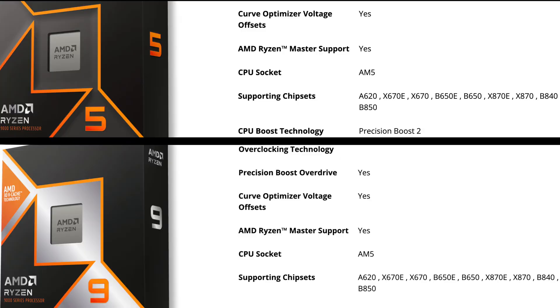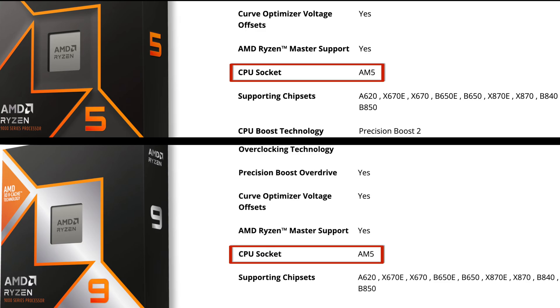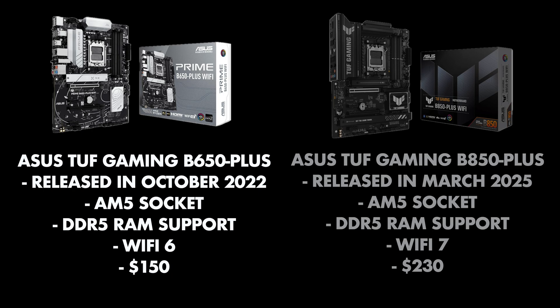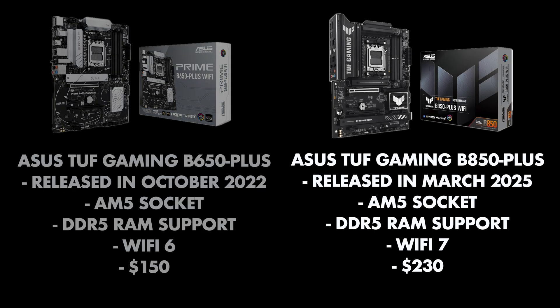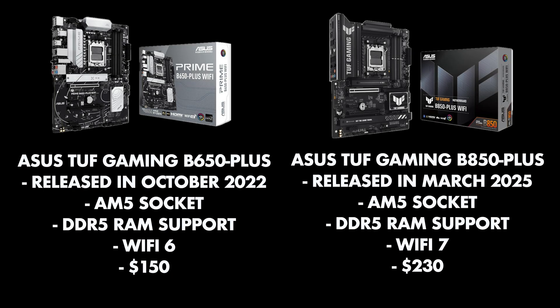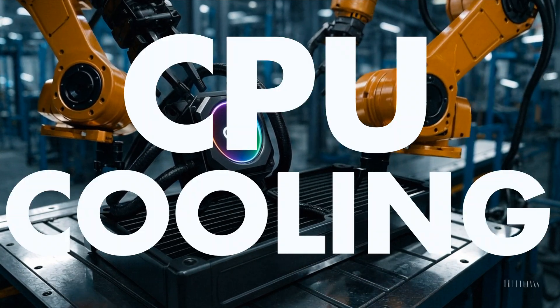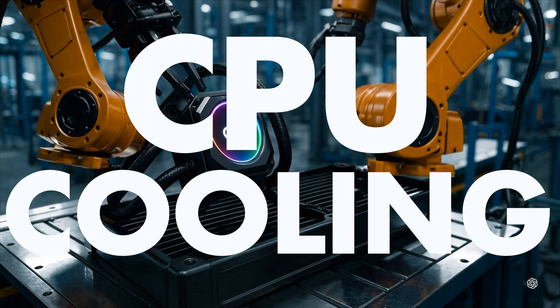Once you've decided on which CPU to get, you can pick a motherboard — just make sure it has the right socket. Both AMD CPUs use the AM5 socket. Unless you want the latest chipset and Wi-Fi 7, you could get the ASUS B650 Plus instead of the B850 Plus. Even though the B650 is a bit older, both motherboards will work fine with the latest GPUs and AMD processors.